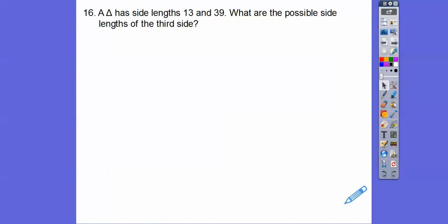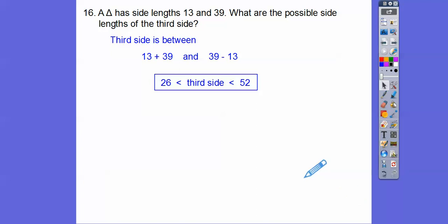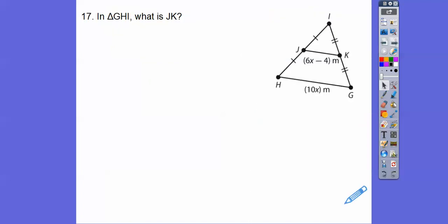A triangle has lengths 13 and 39. What are the possible side lengths of the third side? If we add them and subtract them, that'll give us the boundary. So the third side has to be less than 13 plus 39, and it has to be greater than 39 minus 13. So less than 52 and greater than 26. On the test, I might list 26 and 52 as no-nos, and then any side in between like 27, 28, 29, or 50.9, 51.9 would be okay.